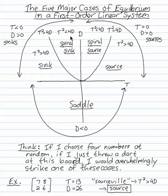The same applies on the other side for sinks. If t squared is less than 4d, when t is less than 0 and d is greater than 0, this is a spiral sink. And when t squared is greater than 4d, when the trace is negative and the determinant is positive, that's a regular sink.